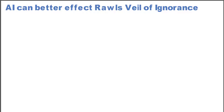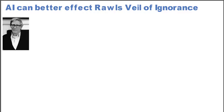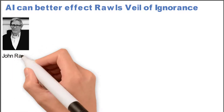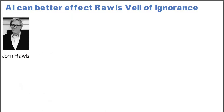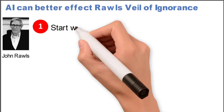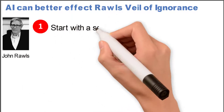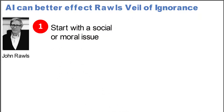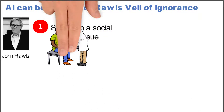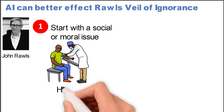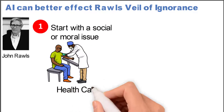My suggestion is that artificial intelligence can better affect Rawls' Veil of Ignorance. What John Rawls talks about in the Veil of Ignorance is that the first thing you want to do is start with a social or moral issue. It's easier to work with an example, so let's take health care.